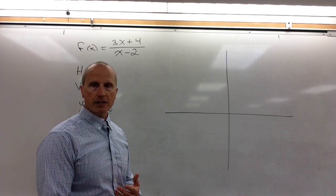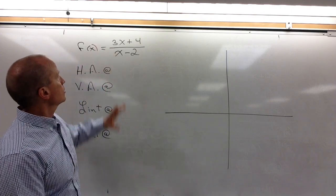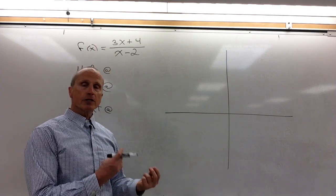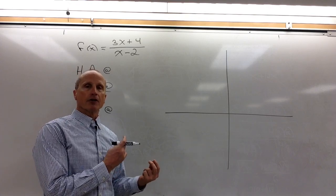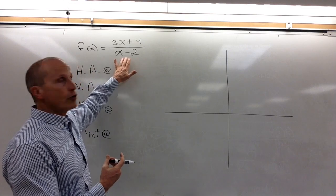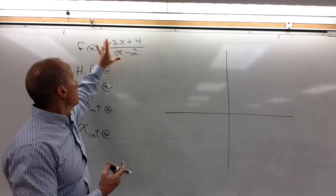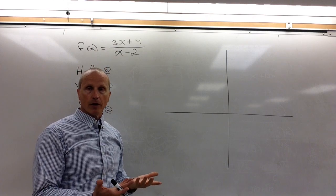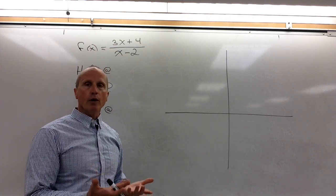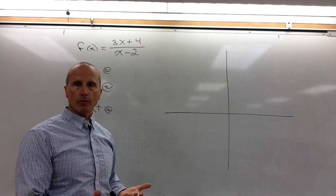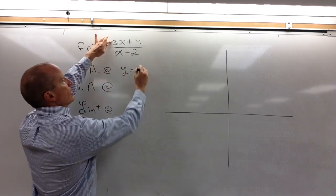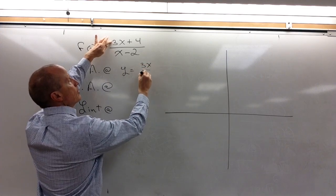Let's start out with a very simple one here: (3x + 4) over (x − 2). The first thing we want to notice is that the degree of the polynomial in the numerator and the degree in the denominator are the same — they're both first degree polynomials. Therefore, if the degrees are the same, you will always have what we call a horizontal asymptote. All you need to do is consider the leading term divided by the leading term.